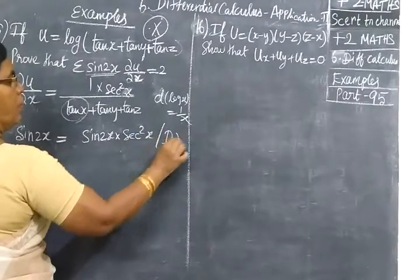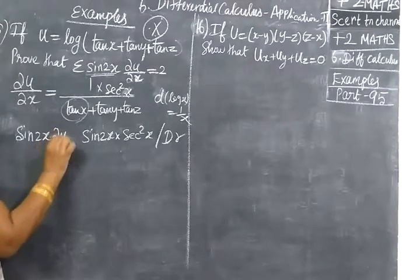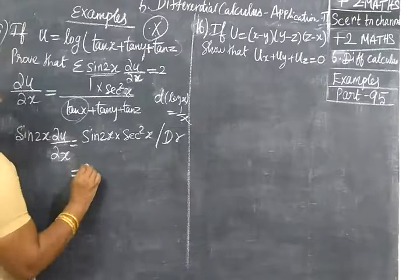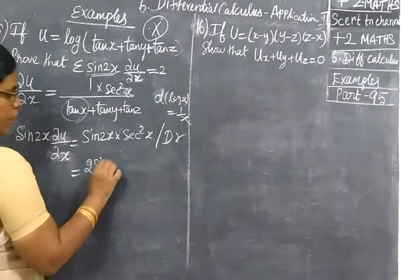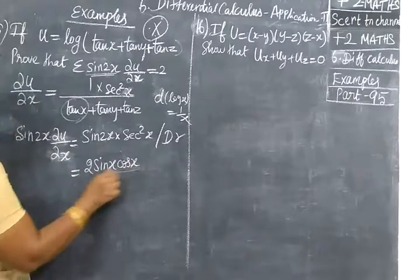Then sequence square here. By denominator. Equal to inner function number du/dx. So equal to sin 2x is 2sin x cos x. Sin 2x equal to 2sin x cos x. This we know.